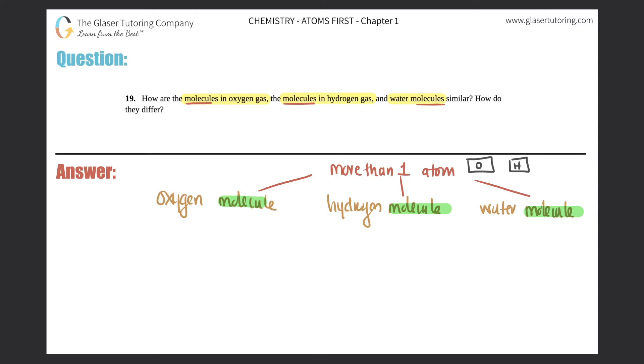So that would be an atom. Molecules, however, they have to have more than one. Now here they're saying that it's an oxygen molecule, so there's got to be more than one of oxygen. So in this case it's going to be O2. Oxygen by itself is O2. Hydrogen molecule—it's a molecule, so it's got to be more than one.